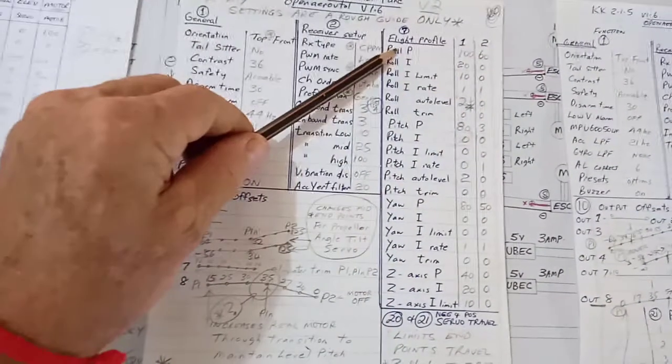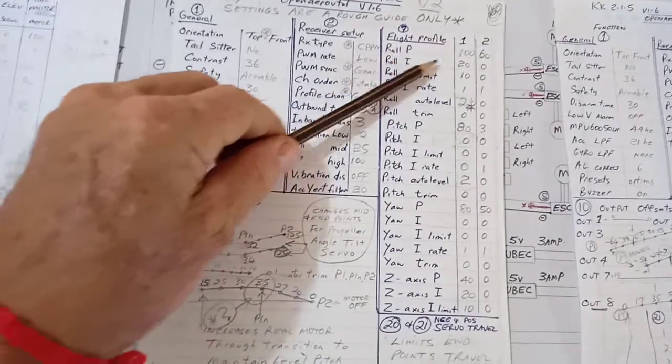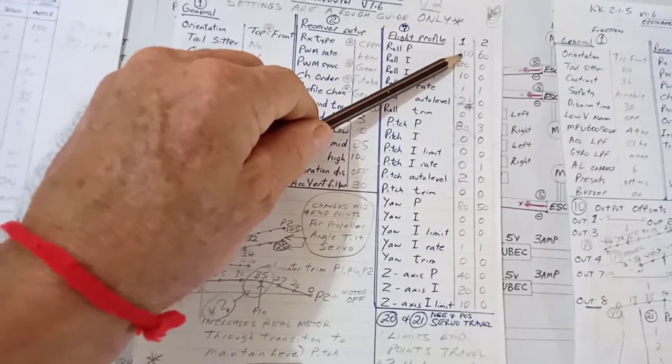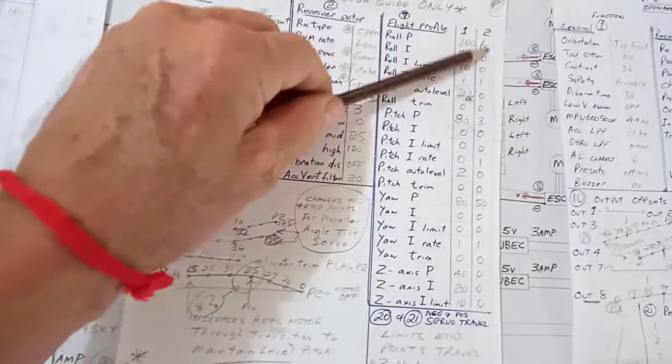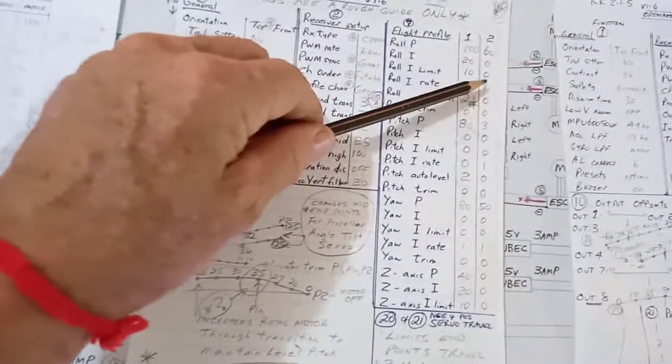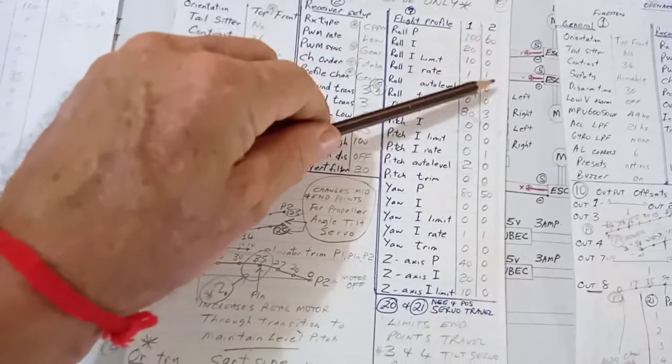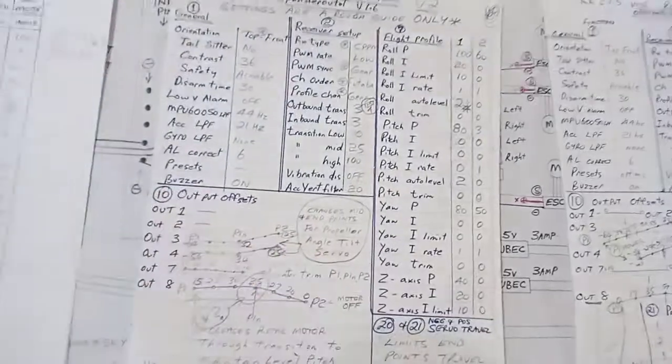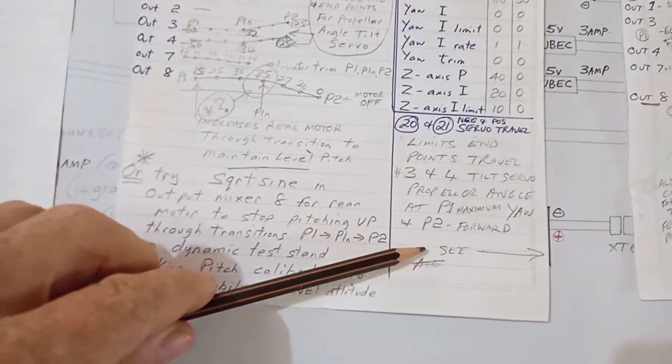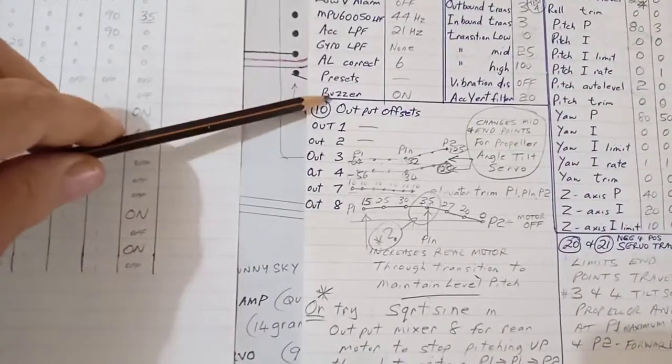For example, your roll P settings would be 100 for hover. And these here actually aren't used, believe it or not. It's up to you if you want to have stability control. You have to add extra numbers in here, and that gets something else that you need to research.